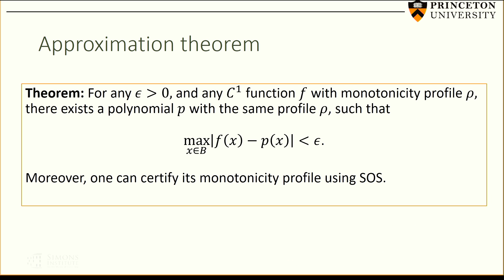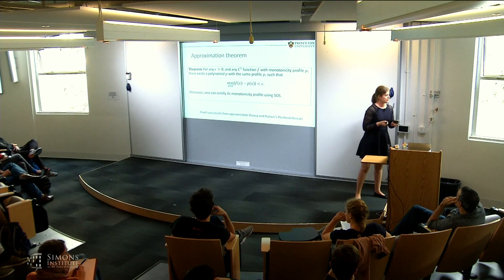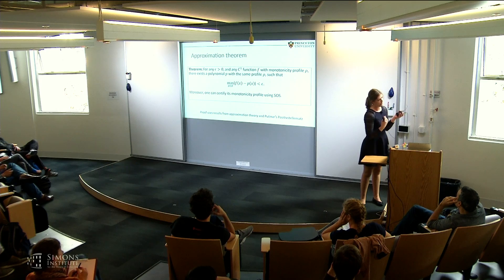How good is our approximation? We have the following result: for any precision epsilon > 0 and any C1 function f with monotonicity profile rho, I can find a polynomial p with the same profile such that f and p don't differ too much over the box, and such that the monotonicity profile of p can be certified using sum of squares. The proof uses results from approximation theory and Positivstellensatz. Regarding the degree: it depends on quantities like the minimum of p over the box, which we don't know, so the bounds can't be computed explicitly.